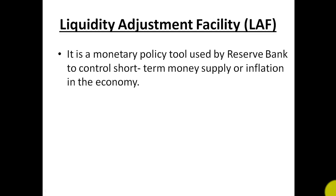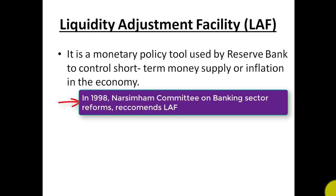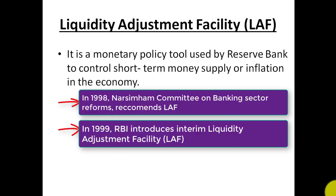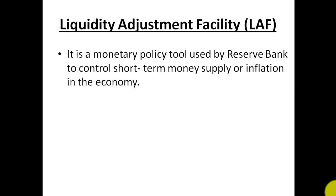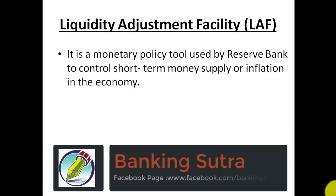Liquidity Adjustment Facility is basically a monetary policy tool used by the Reserve Bank to control short-term money supply or inflation in our economy. In 1998, the Narasimham Committee on Banking Sector Reforms first recommended the Liquidity Adjustment Facility. RBI then introduced an interim LAF, and in 2000, RBI introduced the full-fledged Liquidity Adjustment Facility. Broadly, it is a tool to control the money supply.